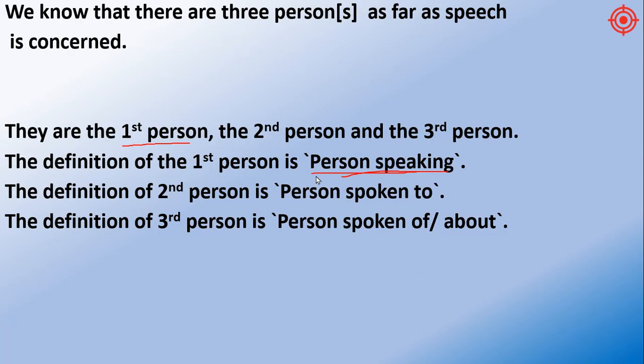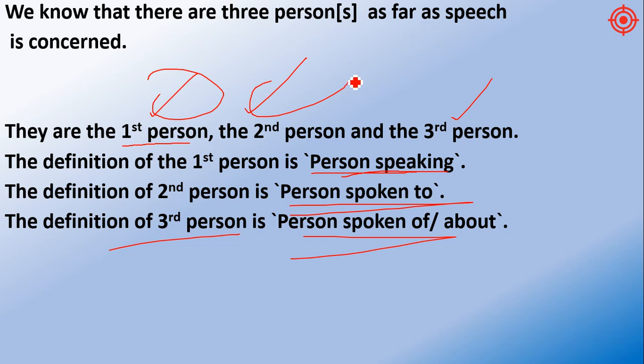Second person is the person spoken to, like we are speaking. And third person is the person spoken of, like we are speaking. In the first case, we can say first person. Second person is speaking, and the third person.